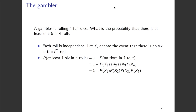The probability of X1 is 5 over 6, and similarly the probability of X2, X3, and X4 are each 5 over 6. So what we have is 1 minus (5/6) raised to the power of 4, which evaluates to approximately 0.518.